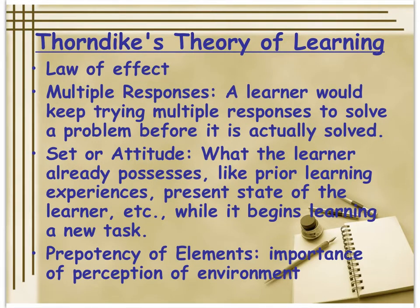So the law of effect — rewarded behavior is more likely to recur — is the big one you need. Multiple responses: a learner would keep trying multiple responses to solve a problem before it is actually solved. The set or attitude: what the learner already possesses — prior learning, experience, present state of mind — all matters when beginning a new task. Prepotency of elements: when you're learning something, you focus on what you view as most important to solving the problem and miss other things — it's about perception of the environment.